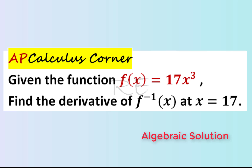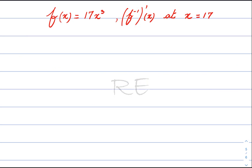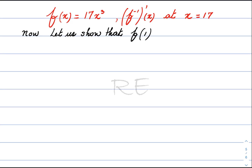We need to find the derivative of the inverse of f of x when x is equal to 17. We are going to show that f of 1 is equal to 17. Therefore, the point (1, 17) belongs to the curve.